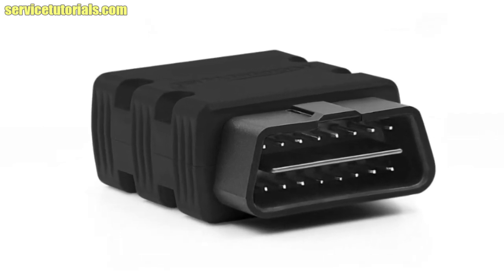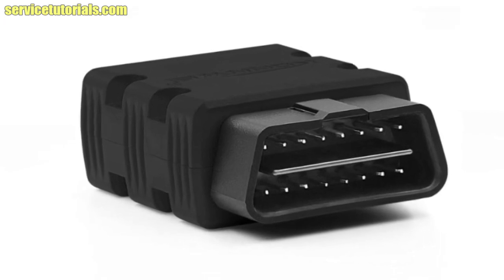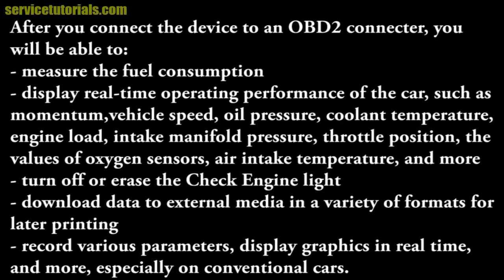After you connect the device to an OBD2 connector, you will be able to measure fuel consumption and display real-time operating performance of the car, such as vehicle speed, oil pressure, coolant temperature, engine load, intake manifold pressure, throttle position, oxygen sensor values, air intake temperature, and more. You can also turn off or erase the check engine light, download data to external media in a variety of formats, and record various parameters or display graphics in real time.